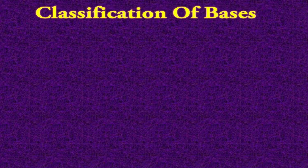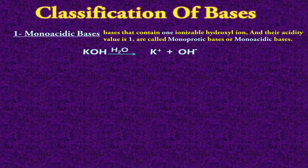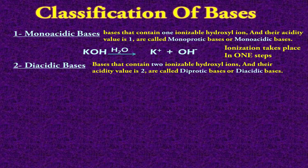On this basis, we can classify bases on the basis of their acidity value. The first type of bases is known as monoacidic bases — these contain only one ionizable hydroxyl ion and their acidity value is 1, so they are called monoprotic or monoacidic bases. An example of a monoacidic base is potassium hydroxide — when it is dissolved in water, it gives a potassium ion K⁺ and a hydroxyl ion OH⁻. Its ionization takes place in one step, therefore it is known as a monoacidic or monoprotic base.